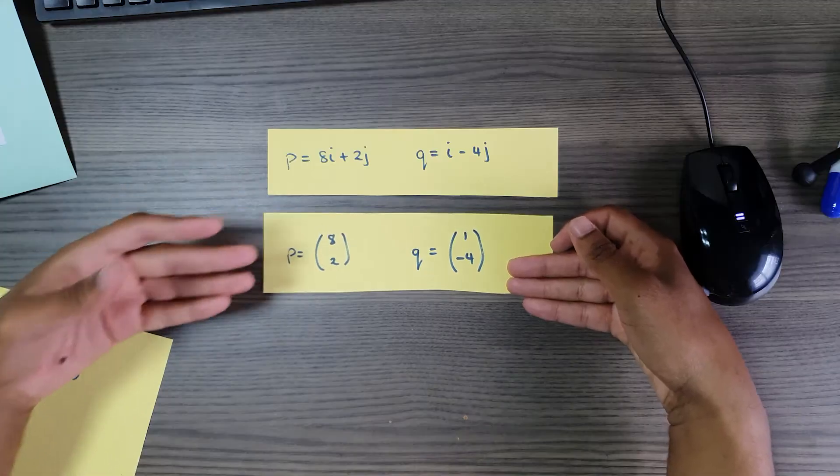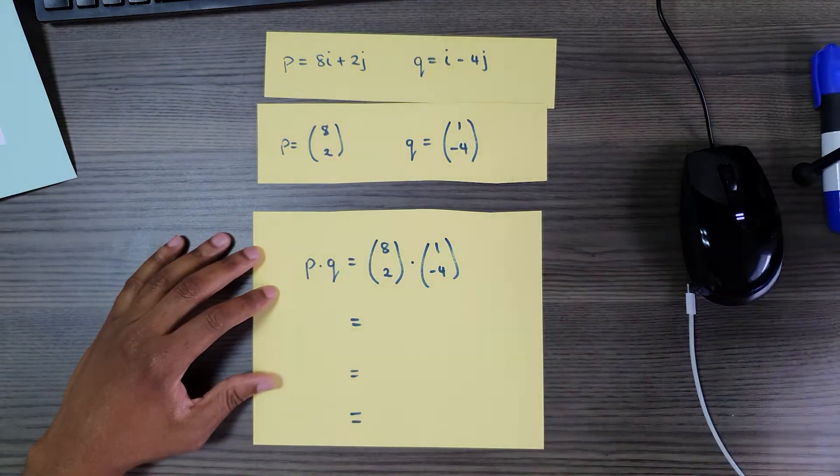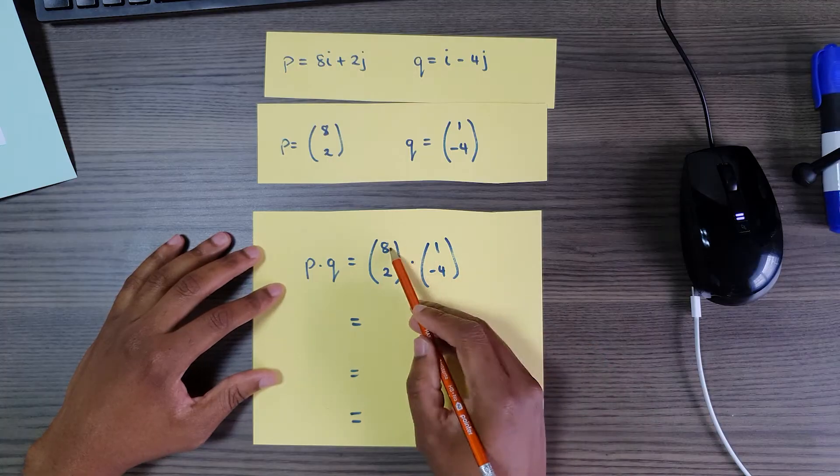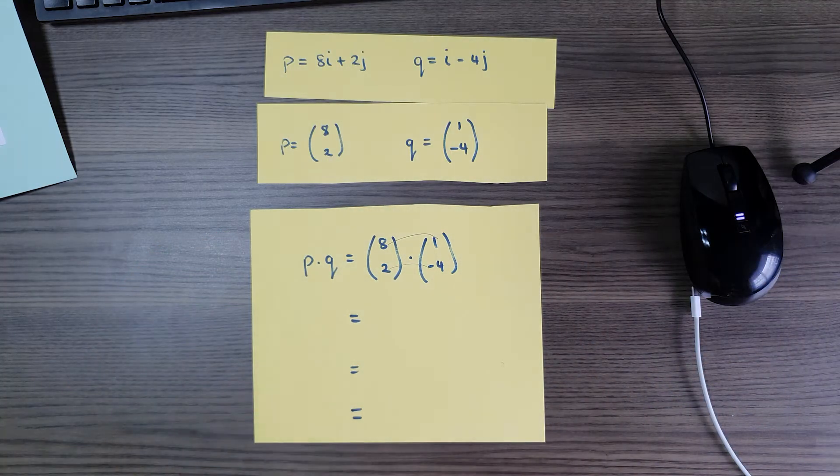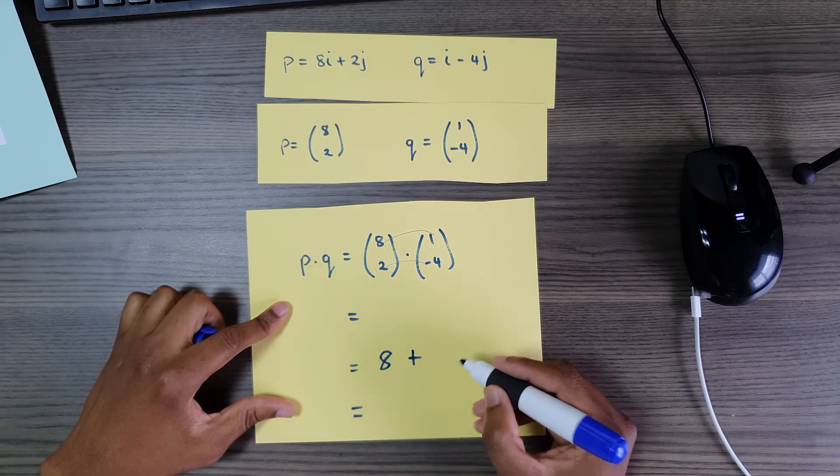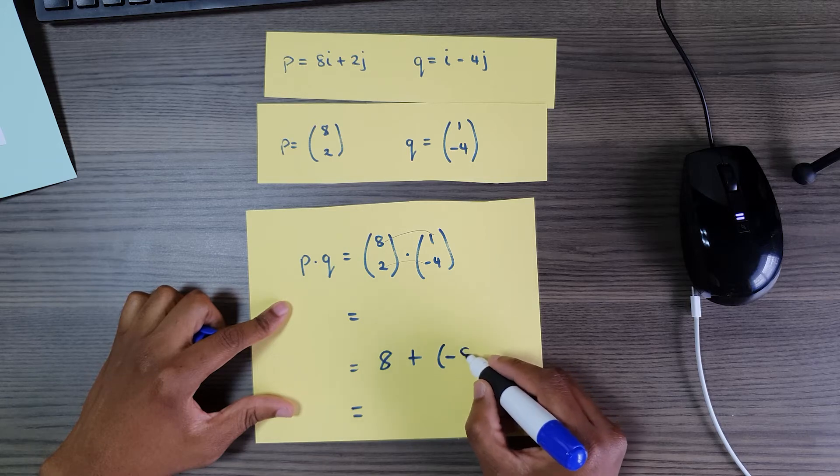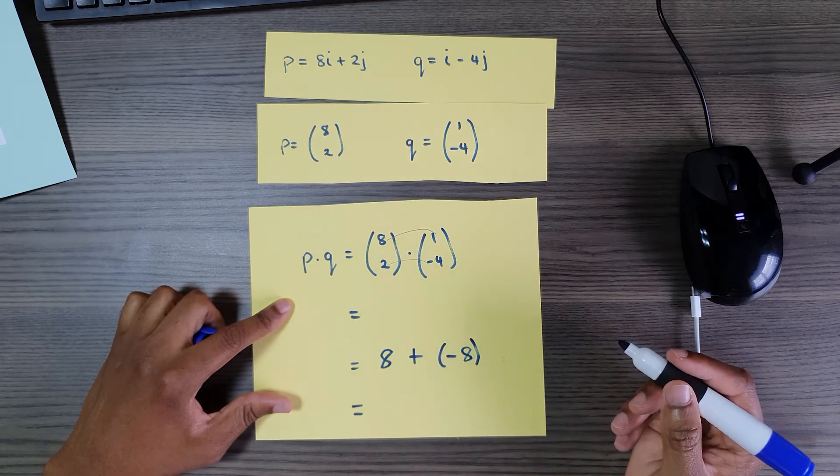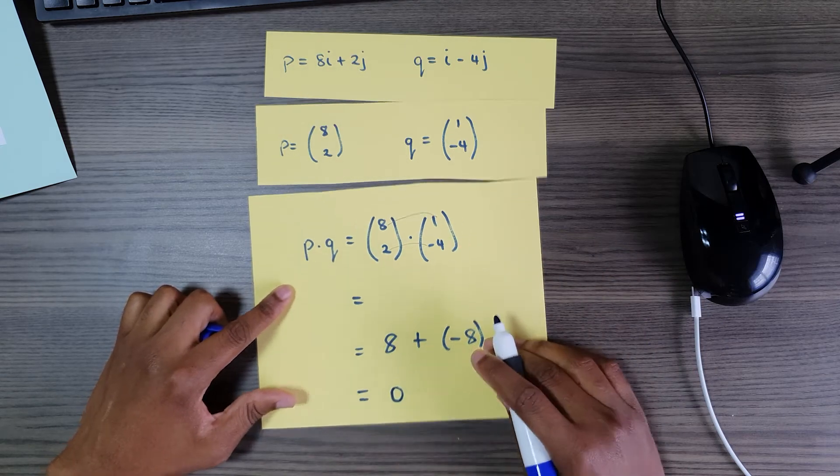So then what's next in the dot product? It's one of the easiest things you can do. I said the 8 by the 1, the 2 by the negative 4. 8 by 1 is 8, plus 2 by negative 4 is negative 8. Interesting. So 8 plus negative 8 is actually zero.